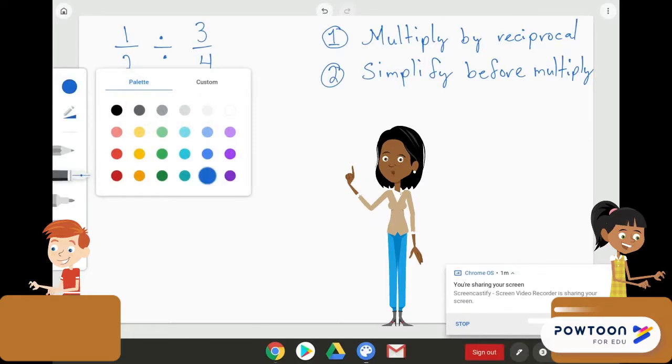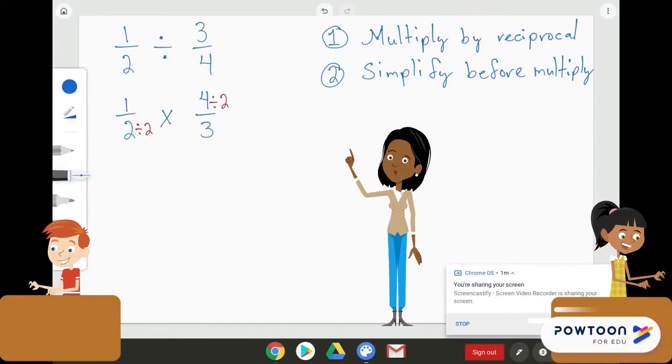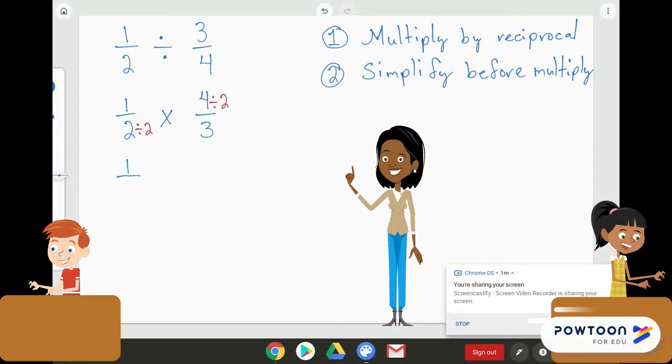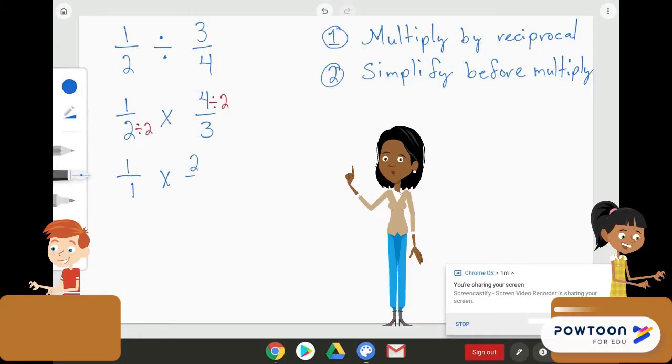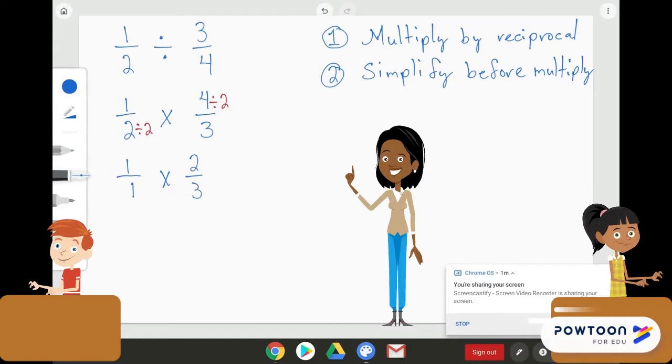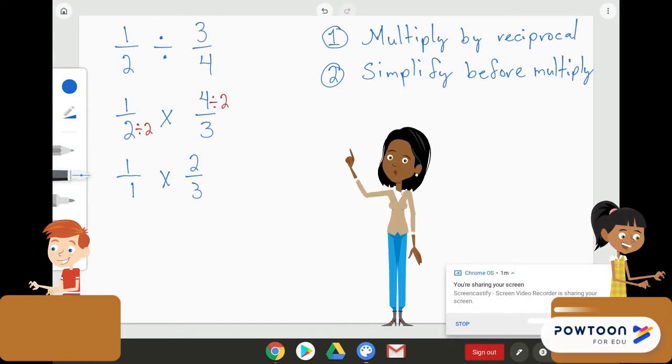And we are going to simplify that to be 1 over 2 divided by 2 is 1, times 4 divided by 2 is 2 over 3. And the reason why we simplify before we multiply is to keep our numbers smaller. It may seem like it's not necessary for this particular example, and it's not. But when our numbers get larger, the smaller we can reduce them down to, the easier our math is going to be for us.